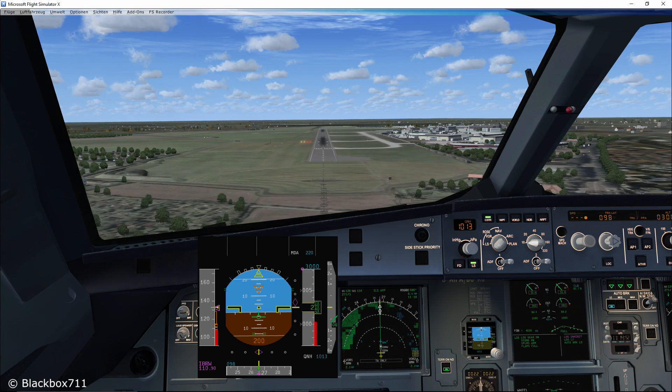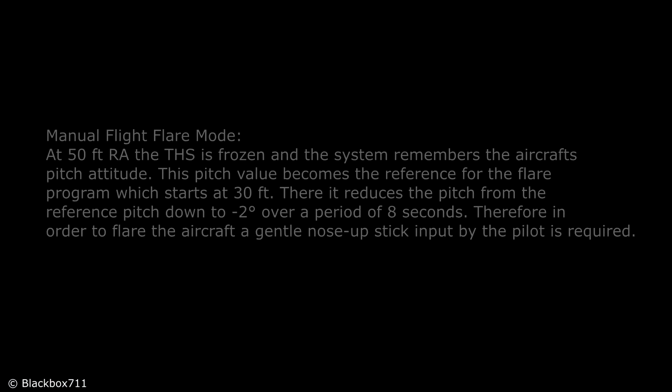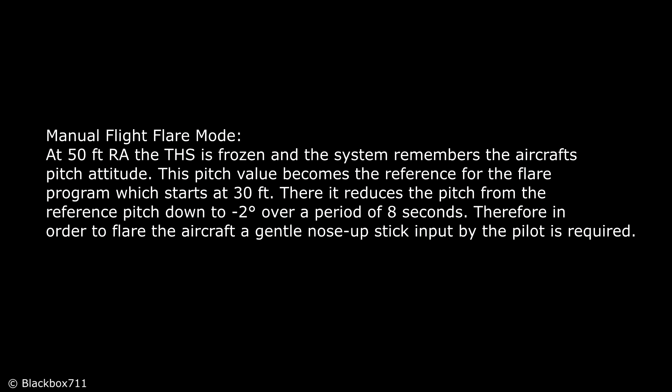Now I have to talk about the system behavior of the fly-by-wire system when passing 50 feet radio altimeter. At that point, the trimmable horizontal stabilizer is frozen and the normal flight mode changes to flare mode. The flare mode is essentially a direct stick-to-elevator relationship with some dampening provided by the load factor and the pitch rate feedbacks. This means the system memorizes the aircraft's attitude at 50 feet and it becomes the initial reference for pitch attitude control. As the aircraft descends further through 30 feet, the system begins to reduce the pitch attitude to minus two degrees down over a period of eight seconds.